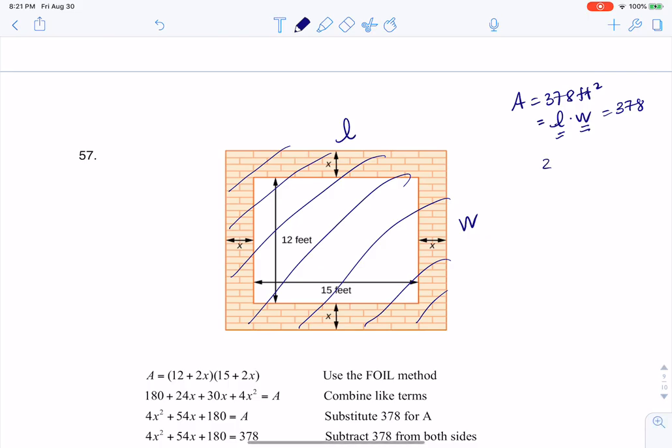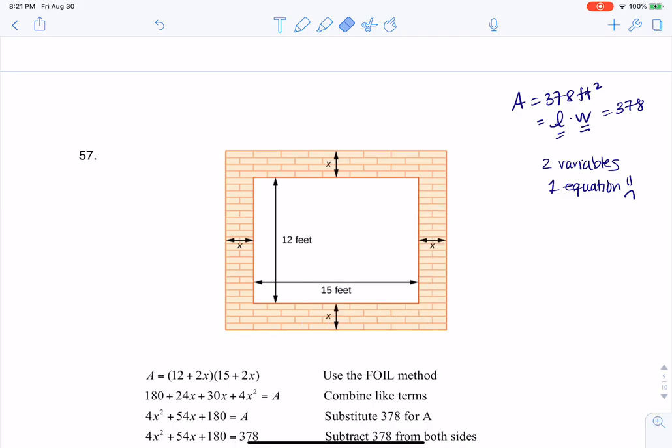But right now you can see I'm out of whack. I have two variables and only one equation. That's just not workable when you're trying to solve variables and you only have one equation but two variables. So how is this going to work?